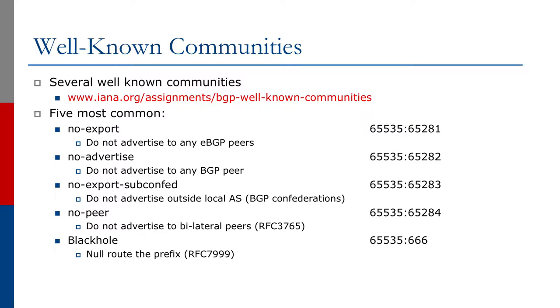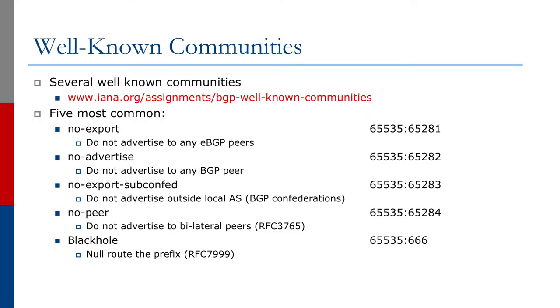For example, you may learn a prefix from a neighbor on your border router and decide you don't want to announce it anywhere else in your network. The standard way would be to put a prefix filter on all your internal BGP sessions — but then you've got to manage it, update it, and add to it as more IBGP sessions are set up. What happens if you forget? Instead, it's much easier to tag the prefix with noadvertise as it comes in, and BGP sessions that see the noadvertise community attached will automatically drop it. Much easier to manage.